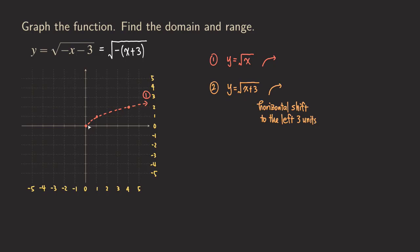We look at the key points. Since the shape doesn't change, we just move the graph three units to the left: one, two, three — we get this point. Same thing for the next point: one, two, three. And also that one: one, two, three. Now this is our second graph.